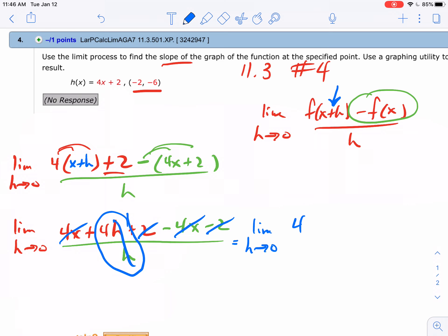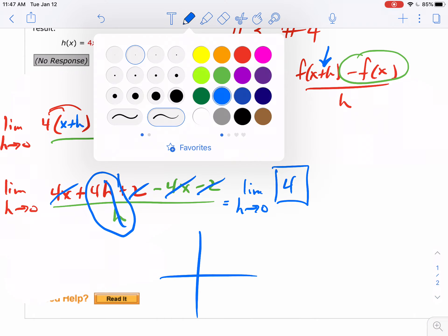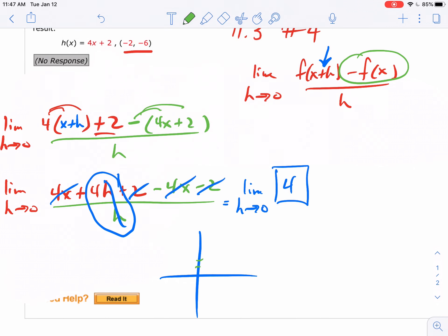If you think about this, I ended up with a limit of 4. When you look at 4x plus 2, you're going to have a straight line.